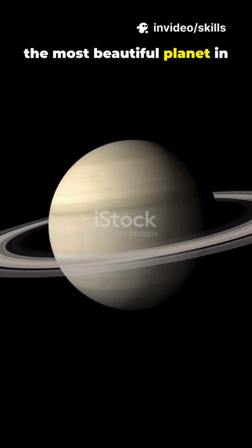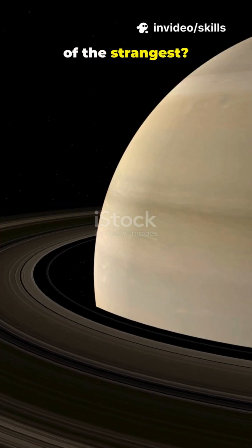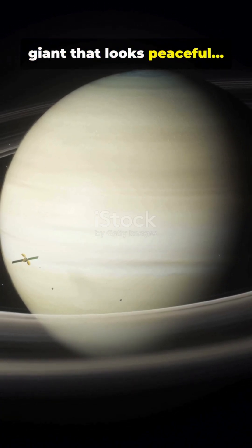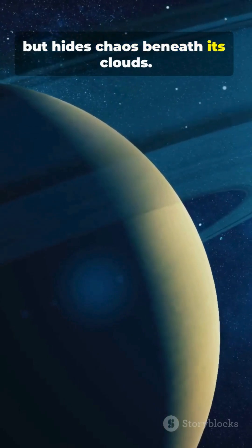The most beautiful planet in our solar system is also one of the strangest. Meet Saturn, the ringed giant that looks peaceful, but hides chaos beneath its clouds.